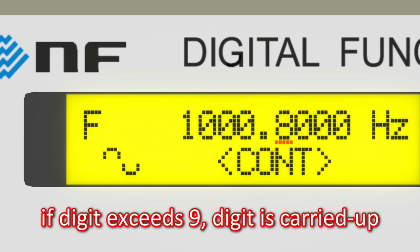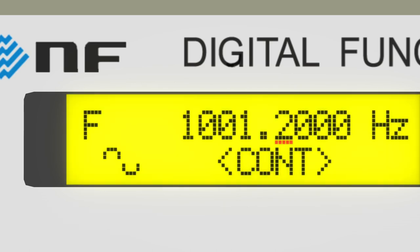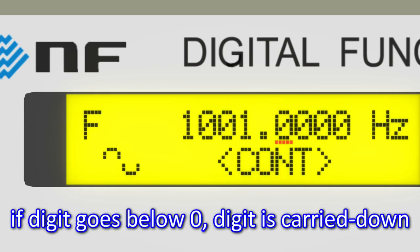When the value exceeds 9, the digit is automatically carried up. And similarly, when the value is below zero, the digit will be carried down.